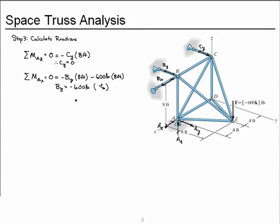Now let's sum forces in the y direction, taking positive y as positive. We have AY, BY (which is −600 pounds), and CY (which was 0). Solving for AY, we get positive 600 pounds. We had originally assumed it in the positive y direction, and so it is.